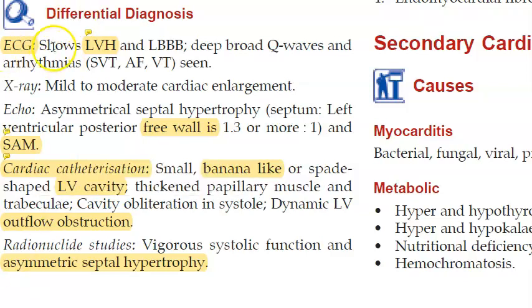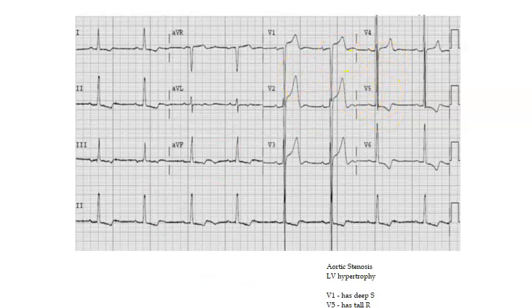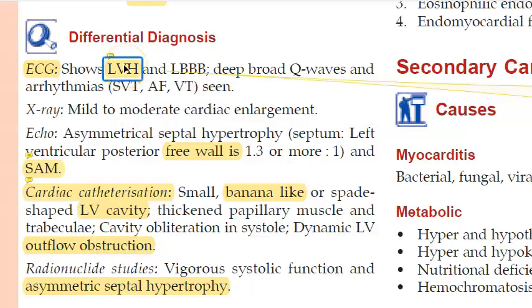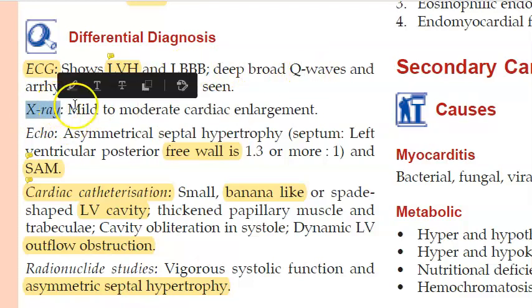On ECG you will see left ventricular hypertrophy. V1 will have a deep S wave and V5 will have a tall R wave. The calculation SV1 plus RV5 or V6 greater than or equal to 35 mm indicates left ventricular hypertrophy. On X-ray there will be cardiac enlargement.